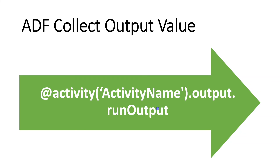So based on these two code changes — one in Databricks and another in ADF — we can receive the output in ADF. In real time, we use the output value for various decisions and for triggering other processes. But in this simple demo, I am going to collect this output variable into one variable in ADF. Hope you understood the requirement — let's get started with the demo.